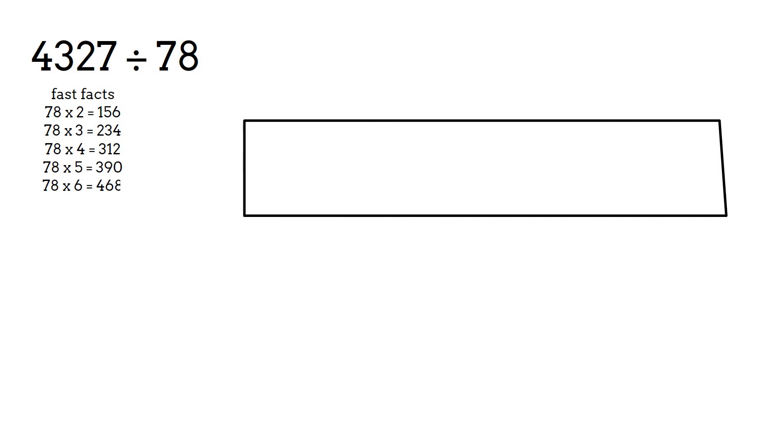Remember with fast facts you can list as many as possible. If the number is very big, try to use fast facts that may be closer to the dividend, and in this case 4,327.